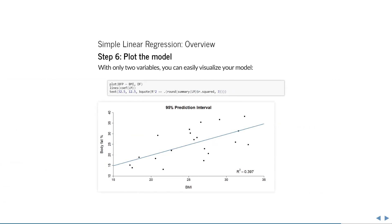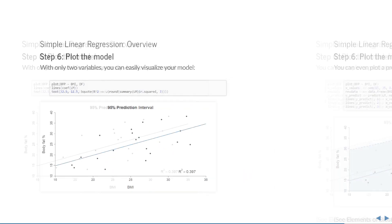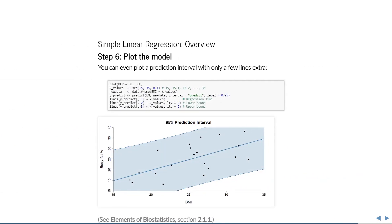As a final step, I highly encourage that you try and plot your model. Simple linear regression only has two variables, so we can summarize the entire analysis in a single plot, and you can even add the amount of variance that this model explains. You could also add a few extra lines of code and plot a prediction interval. Unlike a confidence interval, a prediction interval actually shows you where you would expect 95% of the possible observations. This is also explained in the book.